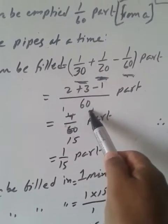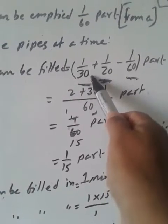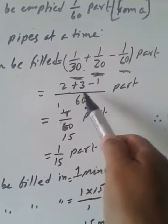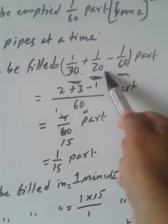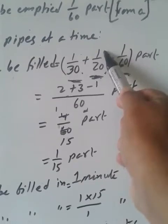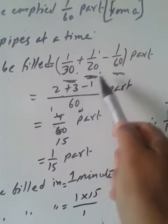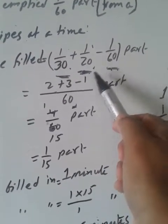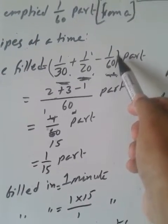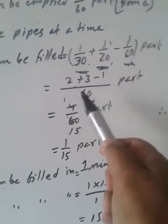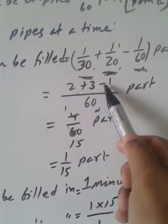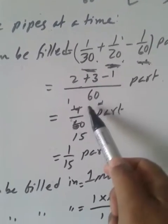The LCM of 30, 20, and 60 is 60. If 60 is divided by 30, it gives 2. Then 60 divided by 20 gives 3, and 60 divided by 60 gives 1. When we add 2 and 3, it gives 5, and if we subtract 1 from 5, it gives 4.